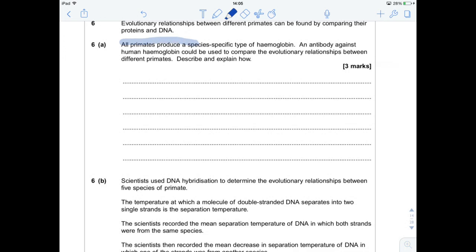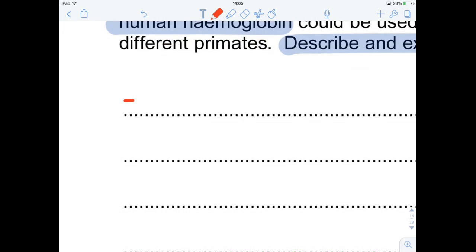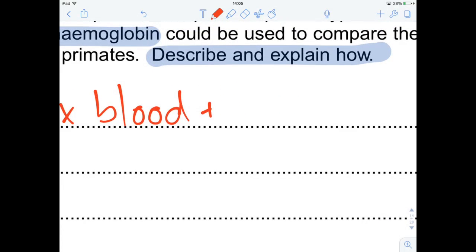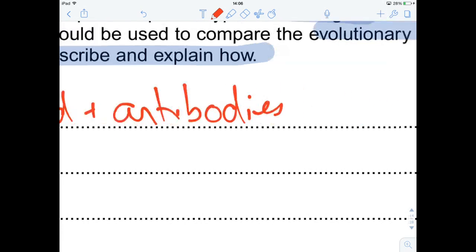All primates produce a species-specific type of haemoglobin and an antibody against human haemoglobin could be used to compare evolutionary relationships. Describe and explain how. This is quite a tricky question but it's one that you can learn a set answer for. Basically what you do is you mix together antibodies and haemoglobin or blood from two different primates. So first one, mix blood and antibodies from two primates.